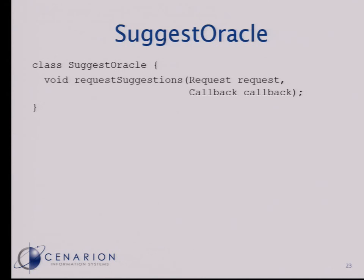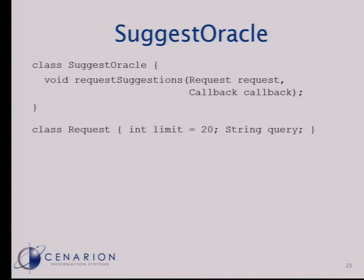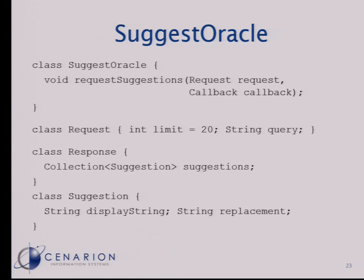Let me quickly show the interface for the suggest oracle. It's actually an abstract class — that's why the class keyword is here. We have the method requestSuggestions, which takes a request and a callback interface. This is neat because since we need to go to the server, we have to be asynchronous, and with the callback interface that's straightforward. We get a request with a query string and the amount of results the user wants to see, and when we find our results in the database we send back a response which is a collection of strings, differentiating between a display string and the actual string that should go into the text box after selection.